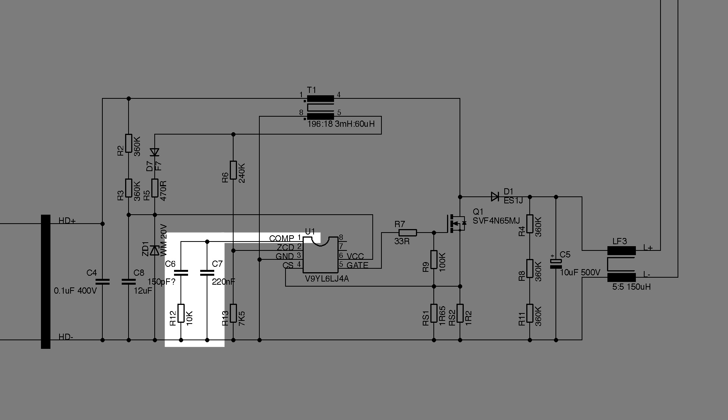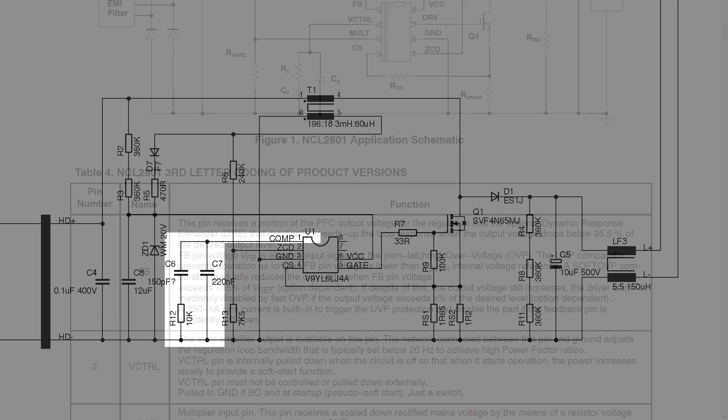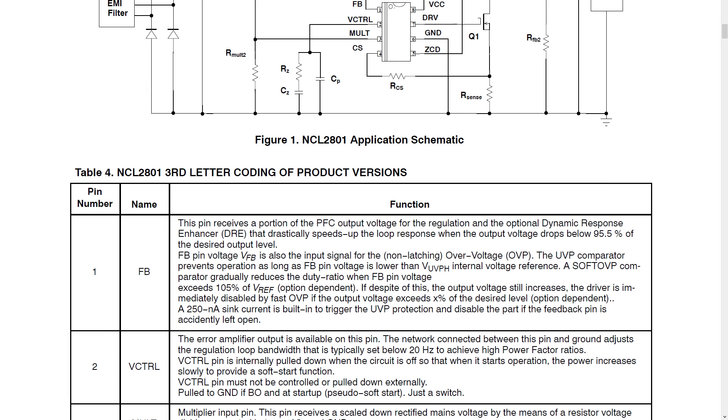The comp input is some sort of compensation thing. Some chips have it labeled as comp, some have it as V control. How it actually works will obviously depend on the chip. The ones with the two caps and the resistor connected to it refer to it as an error amplifier output. Well there are probably enough errors in this video as it is without amplifying them further. So let's move on.